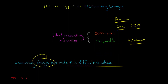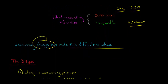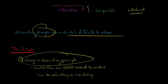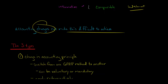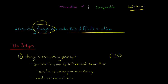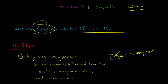So how do we account for an accounting change? A change in accounting principle means switching from one type of GAAP method to another. For example, if a retailer uses FIFO (first in, first out) for their inventory and decides to switch to weighted average cost, that's a change in accounting principle. Both FIFO and weighted average cost are GAAP methods, so the company is still following GAAP — they're just switching from one GAAP method to another.